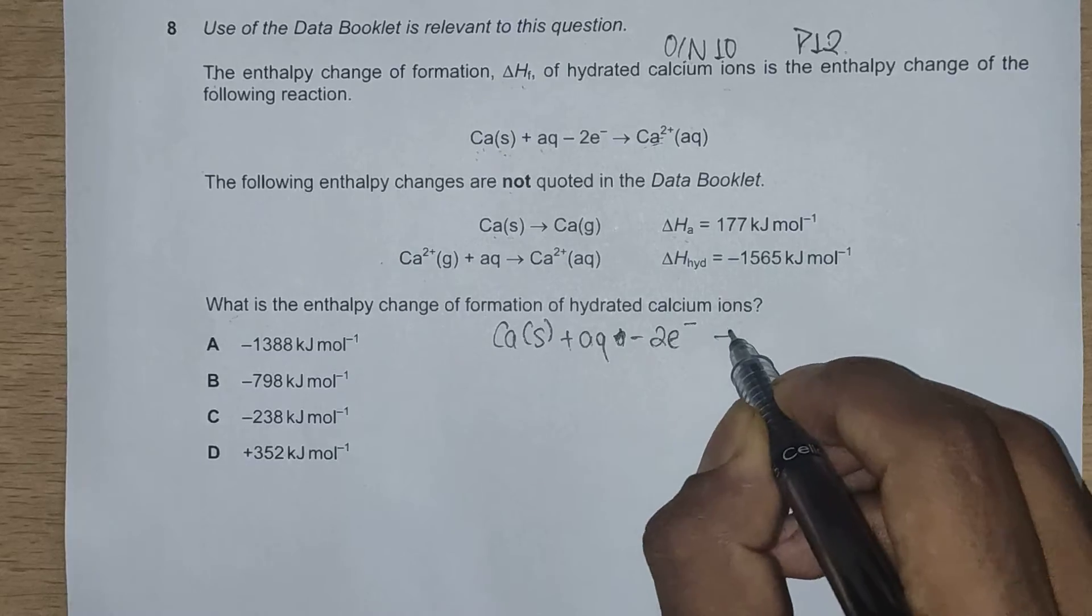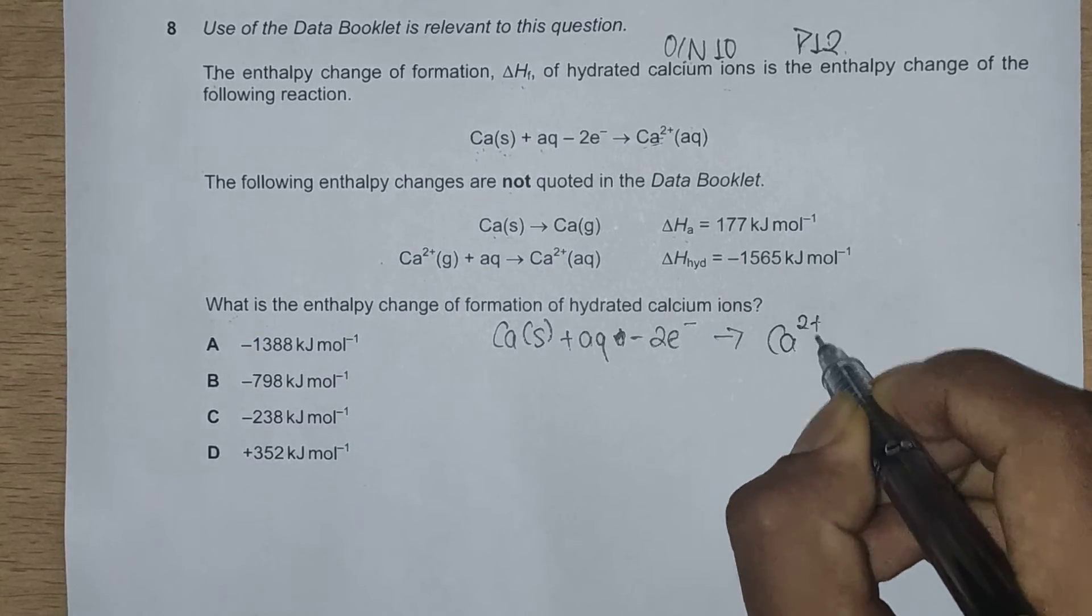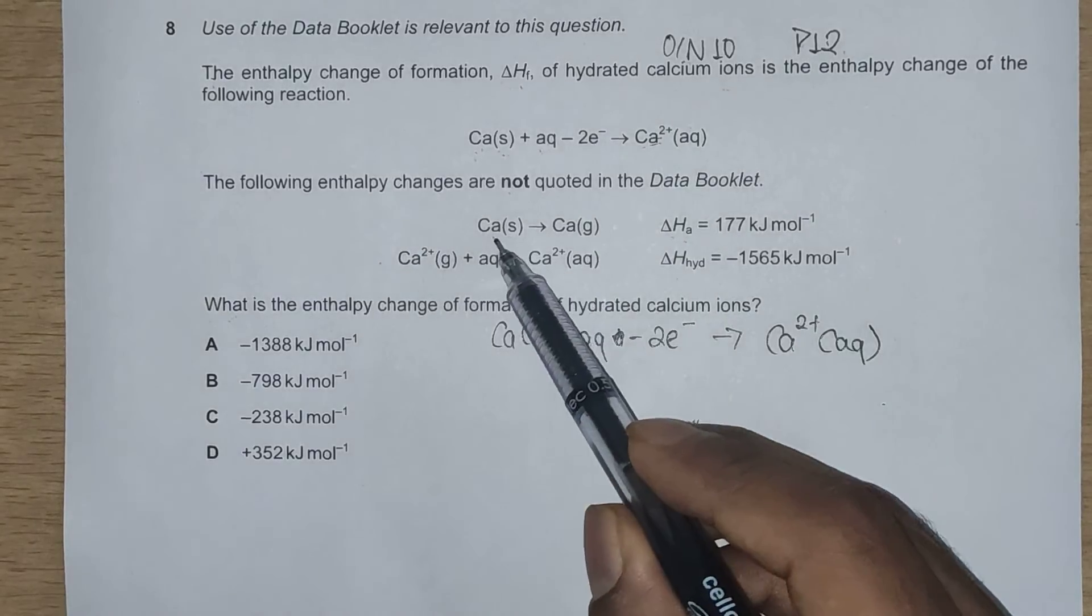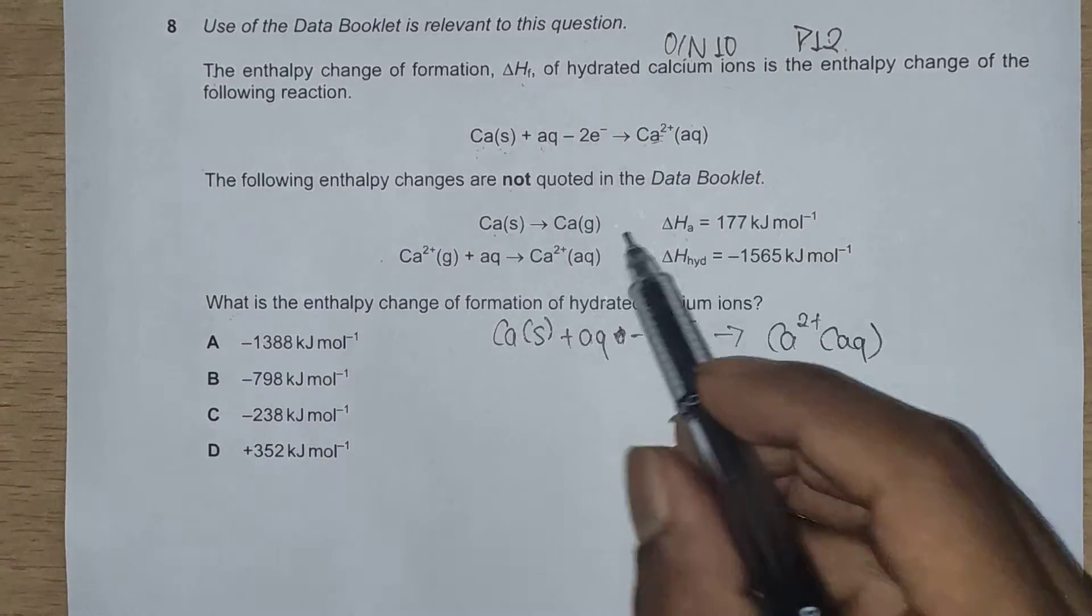Copying this same equation here, we'll have calcium solid plus aqueous minus removal of two electrons gives us hydrated calcium ions.